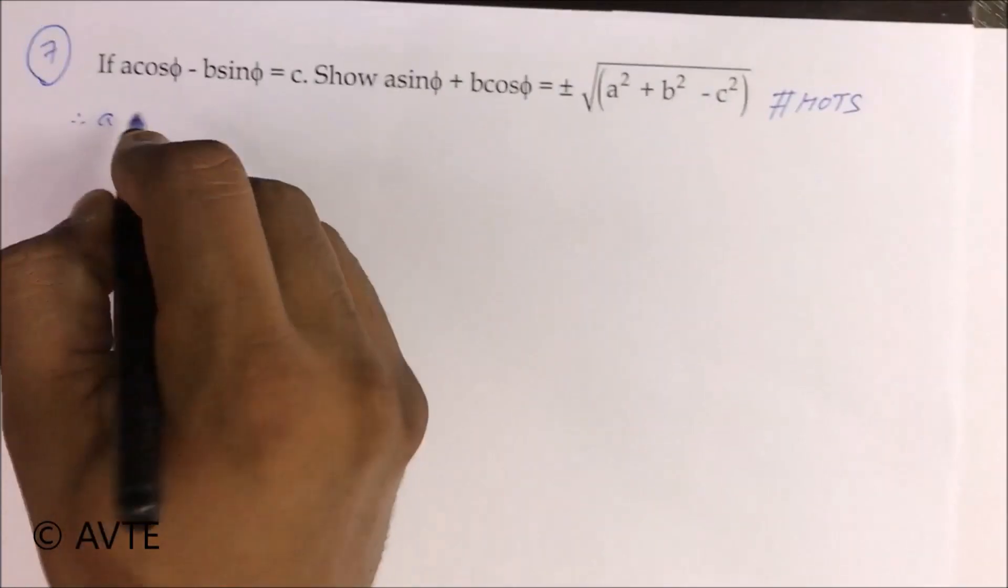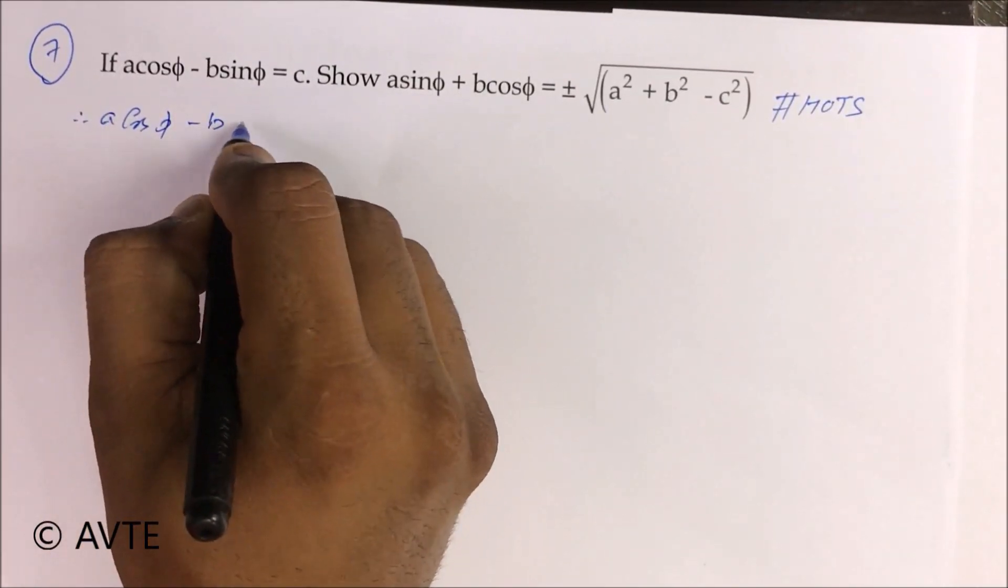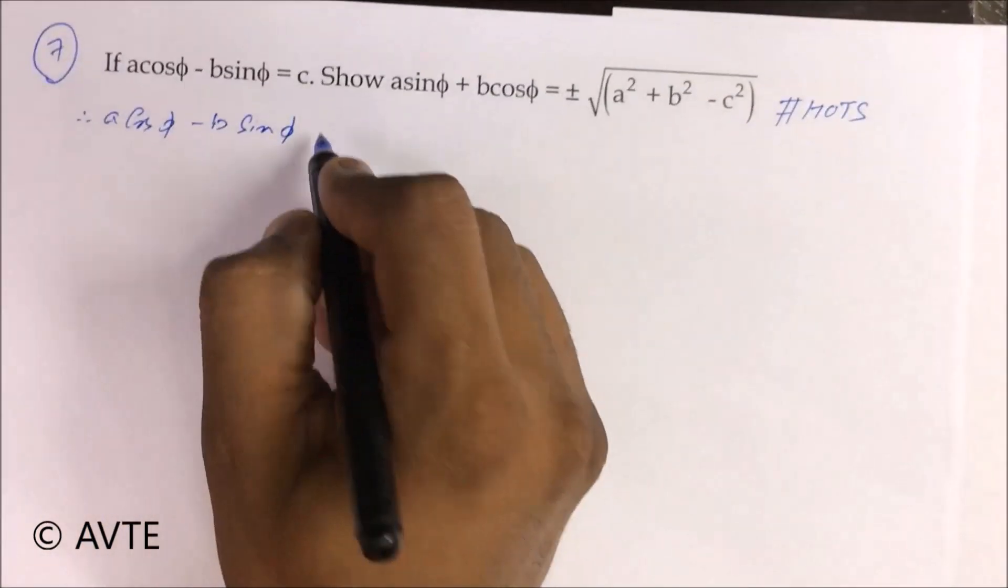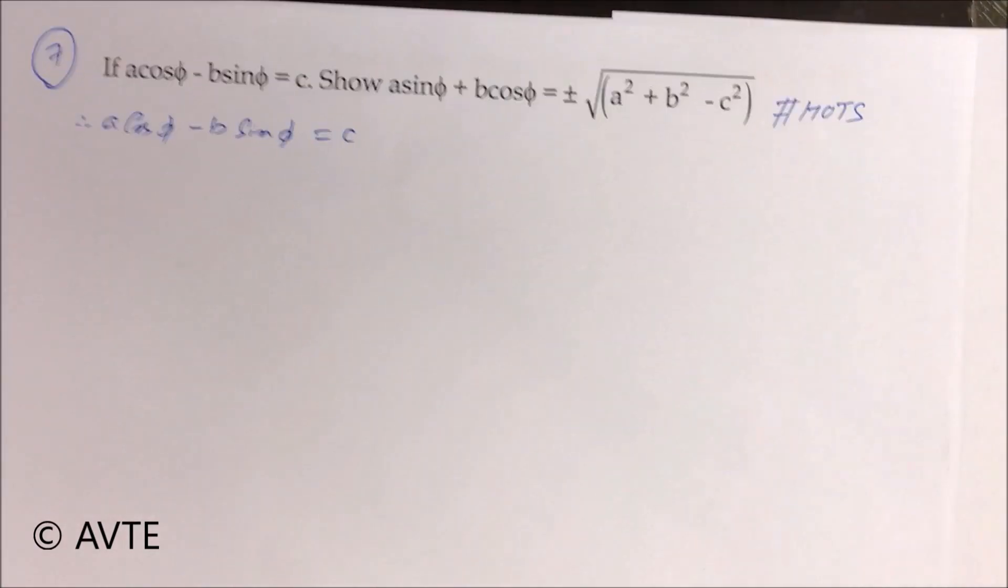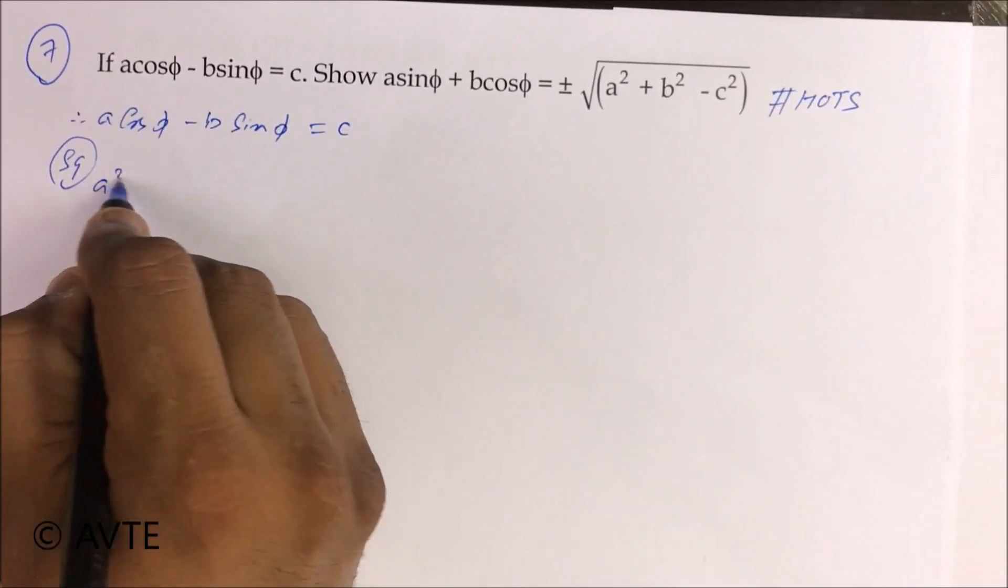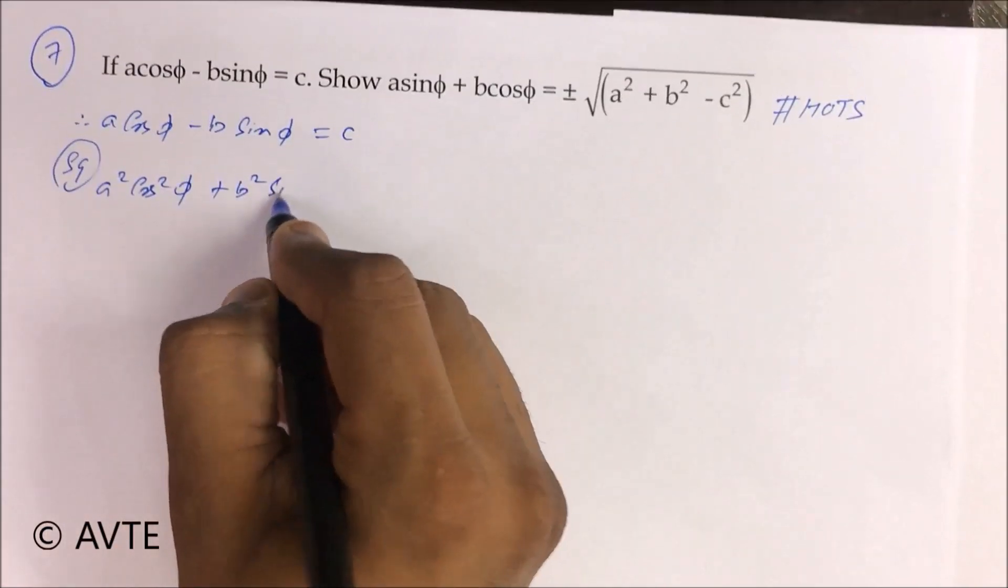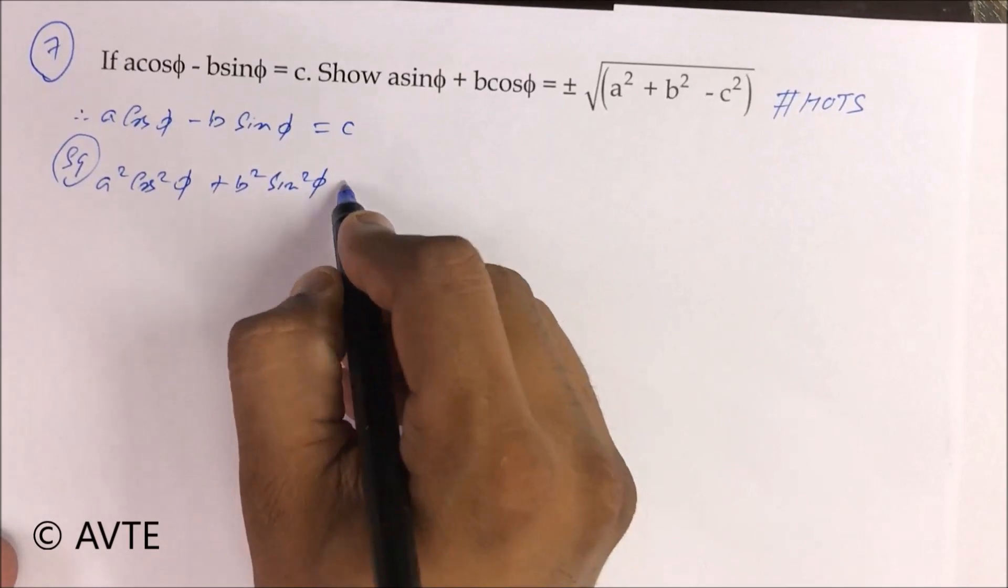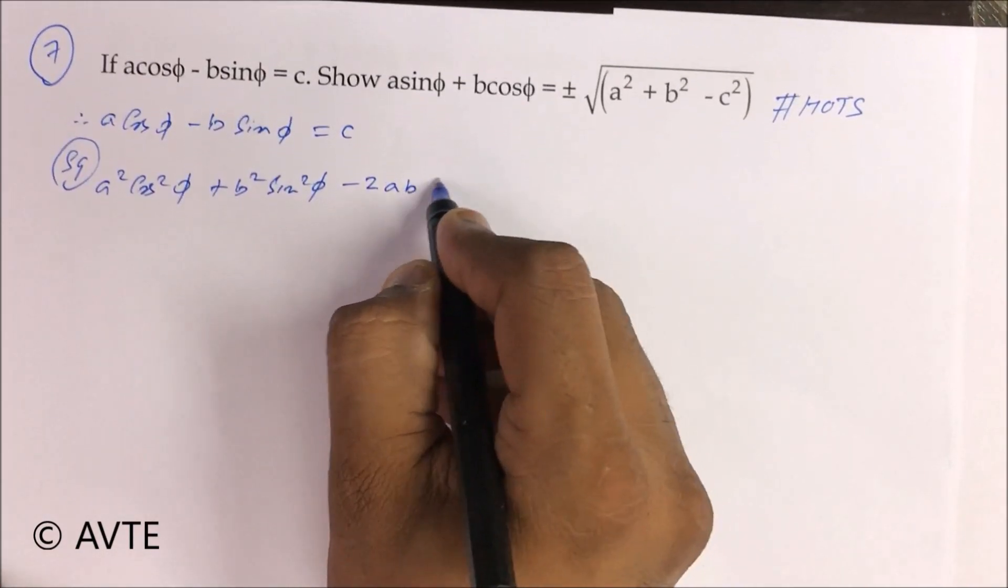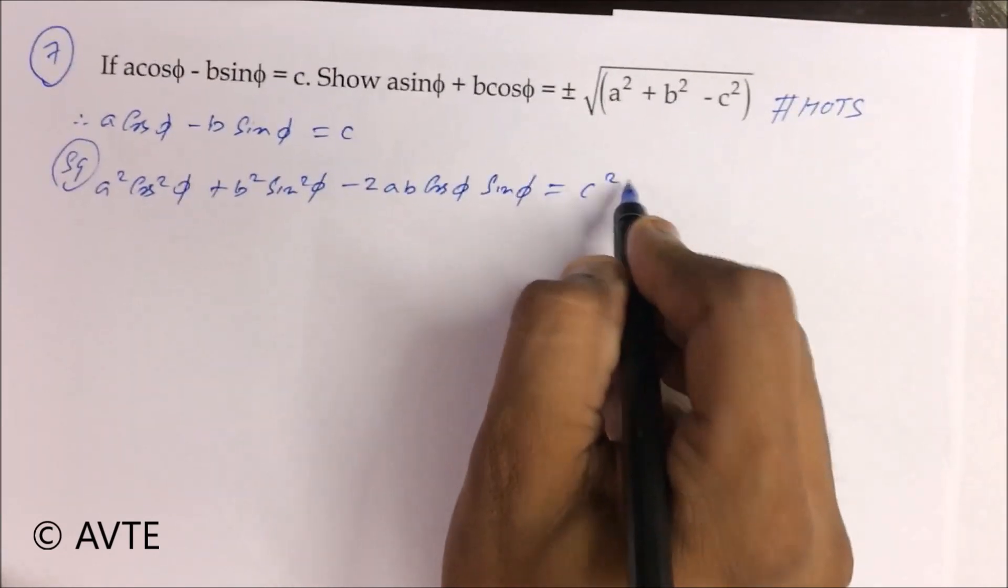So this question is A cos φ minus B sin φ is equal to C. We are just squaring both the sides. A square cos square φ plus B square sin square φ minus 2AB cos φ sin φ is equal to C square.